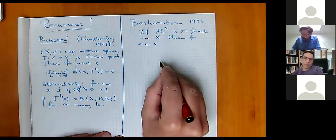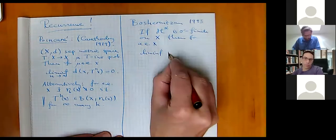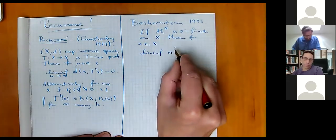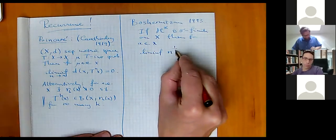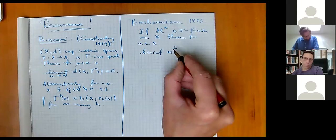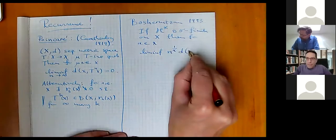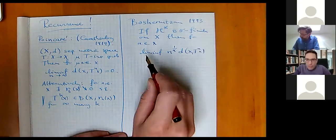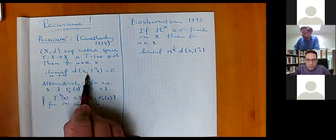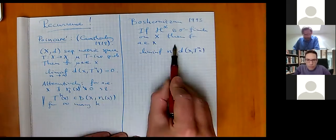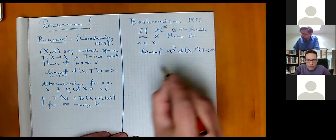then for almost every x, you can improve the result by putting a certain factor in front of this distance, namely n to the power one over alpha. Without that factor, the lim-inf is zero by Poincaré, but now we can put in something increasing — something which goes to infinity — and then the limit will at least be finite for mu-almost all x.